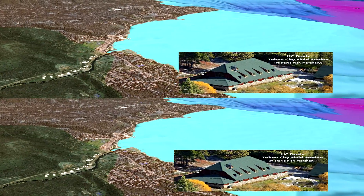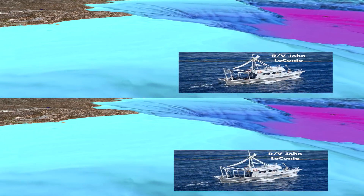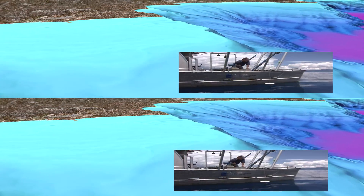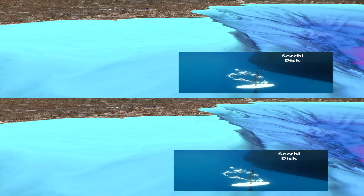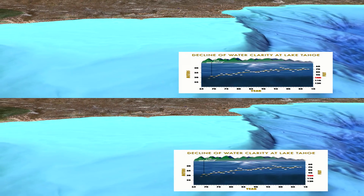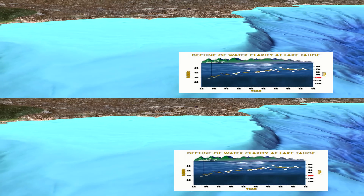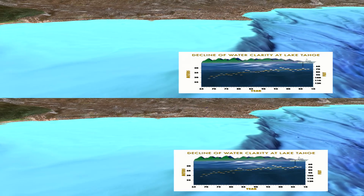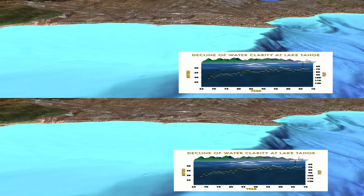Researchers work out of our UC Davis field station located in Tahoe City. Because of the clarity of the water and the extent of the Tahoe City shelf, these researchers must travel several miles aboard the research vessel John LeConte to take Secchi depth readings in the deeper water. Secchi measurements demonstrate a loss of lake clarity over time.